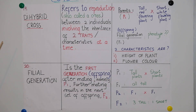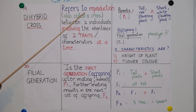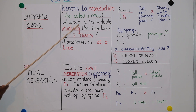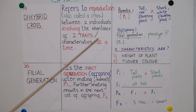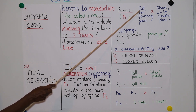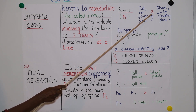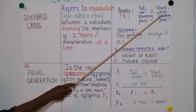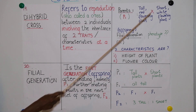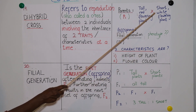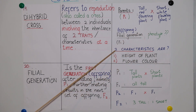Our last two concepts are dihybrid cross and filial generation. Di is Greek origin meaning two. A dihybrid cross refers to reproduction between two individuals involving the inheritance of two traits or characteristics at a time. For example, if a plant which is tall and has red flowers is crossed with a plant of the same species which is short with white flowers, this is a dihybrid cross — because height and flower colour represent two characteristics.